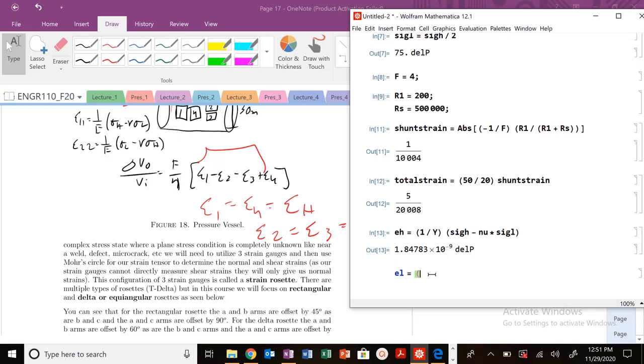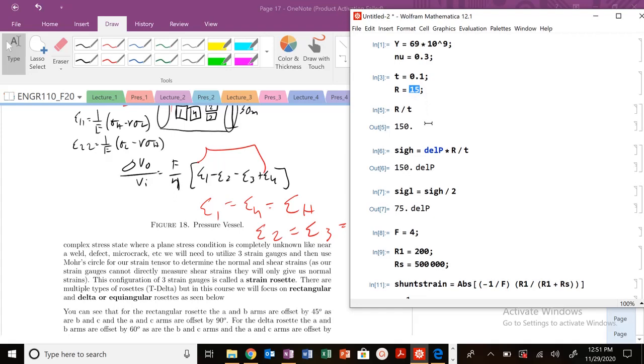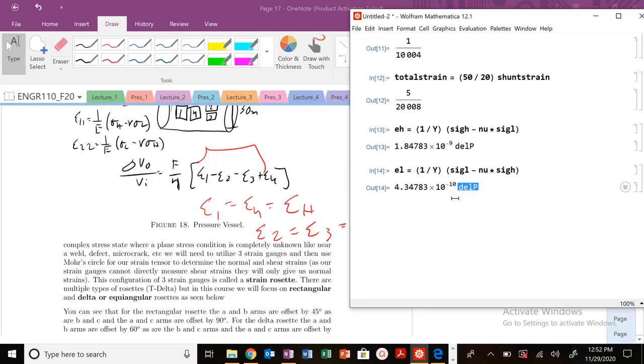I know that my εL is going to be equal to—this is why I love thin-walled pressure vessel problems—sig L minus nu times sig H. Because in a thin-walled pressure vessel problem, we always need to know what's the thickness and what's the radius. Now, look at what's left in these values. We know everything except for ΔP.